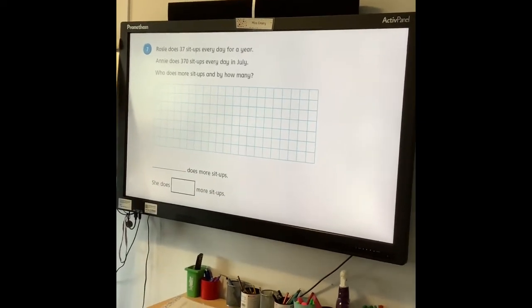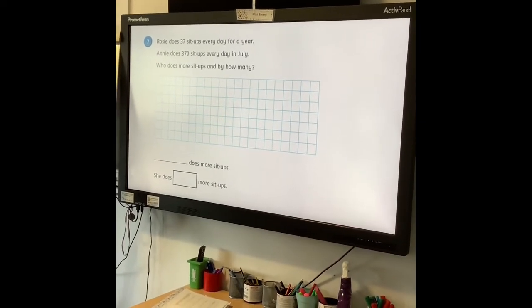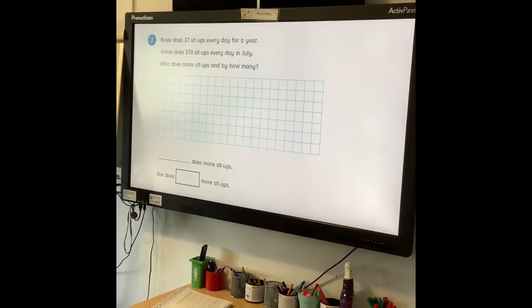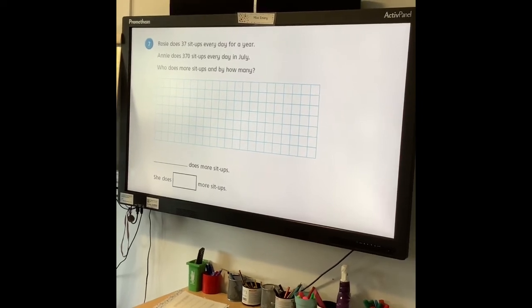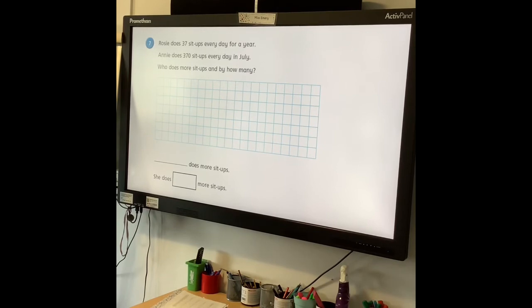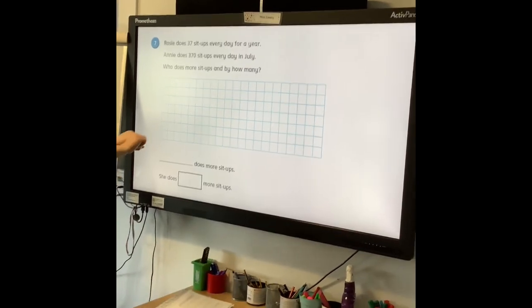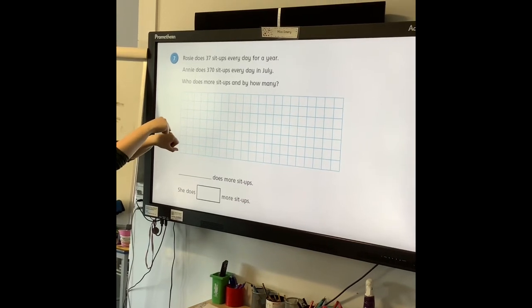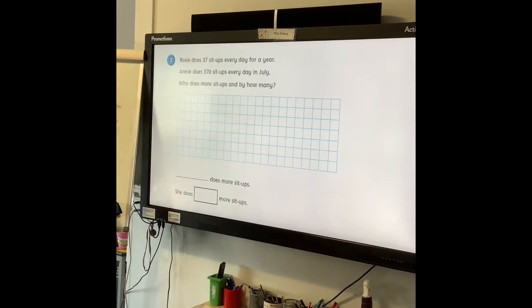Finally, number 7. Rosie does 37 sit-ups every day for a year. Annie does 370 sit-ups every day in July. Who does more sit-ups and by how many? Remember, if you can't remember the days of the month, then put your fists together and count on your knuckles or the bits in between. January, February, March, April, May, June, July, etc. Good luck!